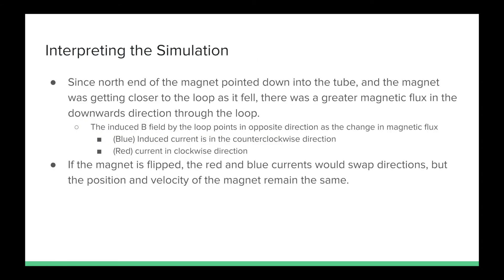In order to interpret the simulation, we must determine the direction of the currents. Since the north end of the magnet pointed down into the tube, and the magnet was getting closer to the loop as it fell, there was a greater magnetic flux in the downward direction through the loop.